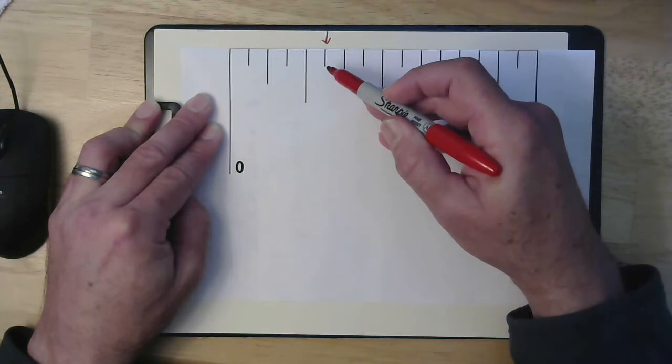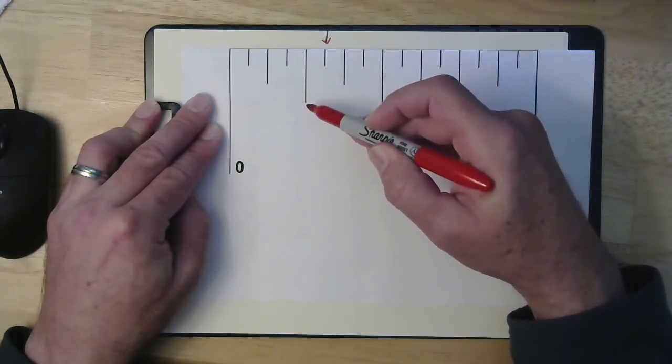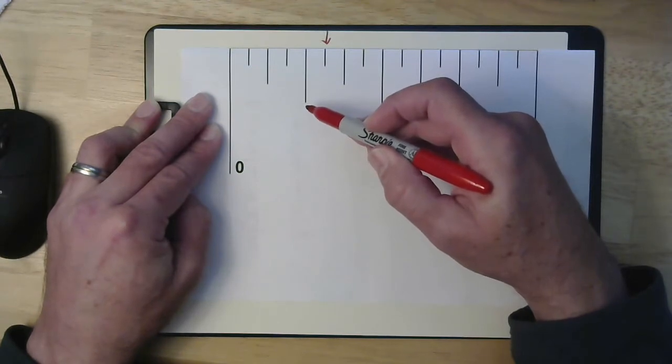So that means I know I'm going to be in sixteenths. So that means I need to take my quarter, which I recognize, and make it into sixteenths.